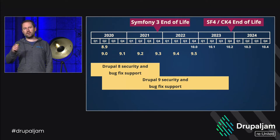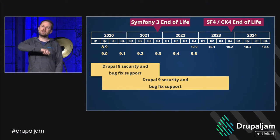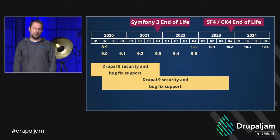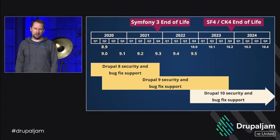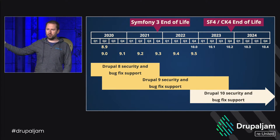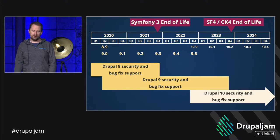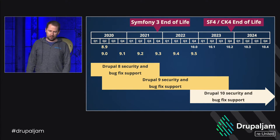The current target for releasing Drupal 10 is December this year, which means there will be an 11-month overlap between Drupal 9 and Drupal 10. We need to run a very tight ship supporting the community's upgrade from Drupal 9 to Drupal 10. We want to make the upgrade path as easy as possible for the community, which is why the release is towards the end of this year.